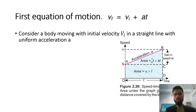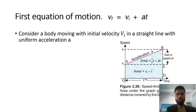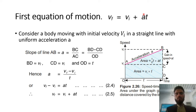The body is moving with Initial Velocity, so there must be some velocity at the start. After some time, the velocity of the body changes — it will not remain the same as the Initial Velocity; it will change to Final Velocity Vf. In order to derive this equation, we have Vf, Vi, Acceleration, and Time, meaning we need the relation between Final Velocity, Initial Velocity, Acceleration, and Time.